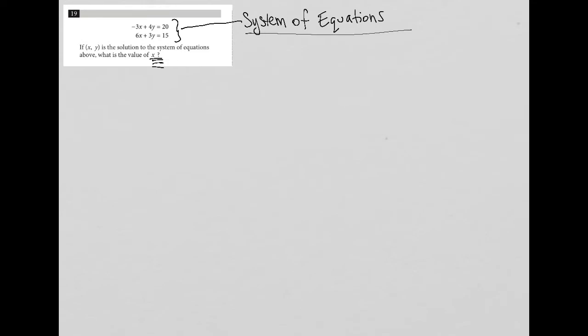So, whenever we see a system of equations on this test, we should be thinking about two different processes. One is substitution, which I will only use on this test if there is a variable already isolated in the question, which is not the case here.